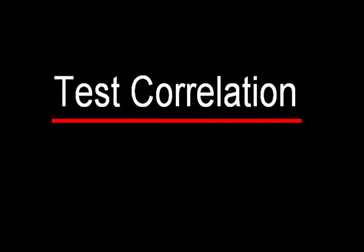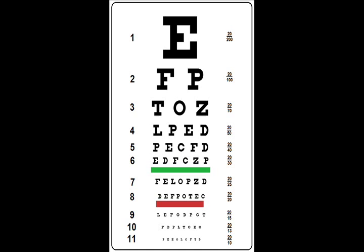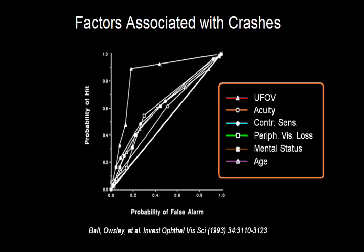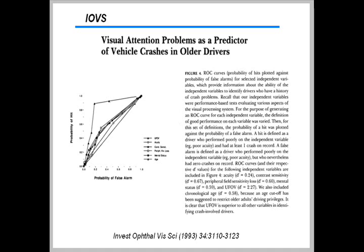Now let us ask how well the parameters of vision we can test are able to predict driver safety. This study looked at multiple parameters including acuity, contrast sensitivity, peripheral vision, useful field of view, mental status, and age, and asked which were best able to predict crash involvement. This article has some complicated statistics, but results reduce to a single graph.